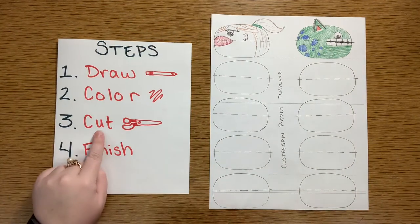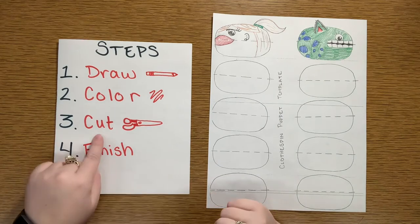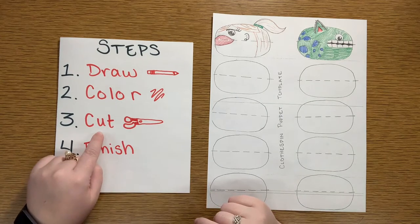All right. So, now we're on step three. I've already drawn and colored. I actually have two puppets here. And now I need to cut out my puppets.